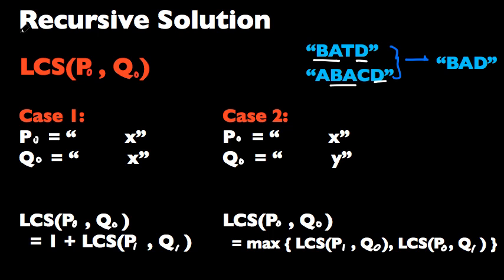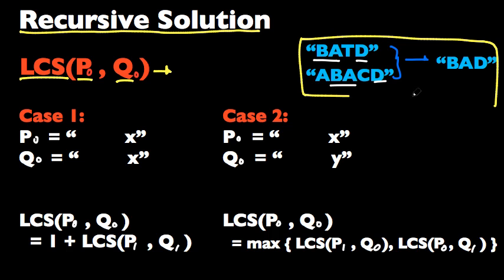Here's a recursive solution. We're gonna write this function LCS, longest common subsequence, of P0 and Q0, the two input strings. And we're gonna return the length of the longest common subsequence instead of the subsequence itself. So with our previous example, we're gonna return instead of B A D, we're gonna return the length of it, which is three.